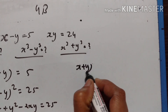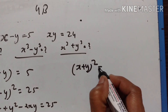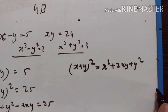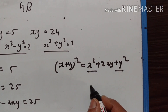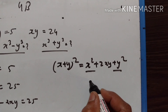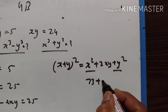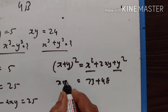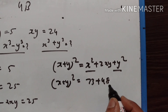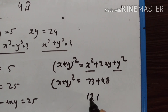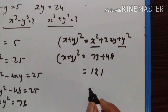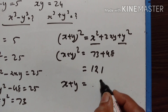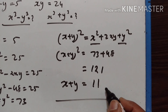Now, x plus y squared equals x squared plus 2xy plus y squared. We know x squared plus y squared is 73, and 2xy is 2 into 24, which is 48. So x plus y squared equals 73 plus 48, that is 121. Taking the square root on both sides, we get x plus y equal to 11.